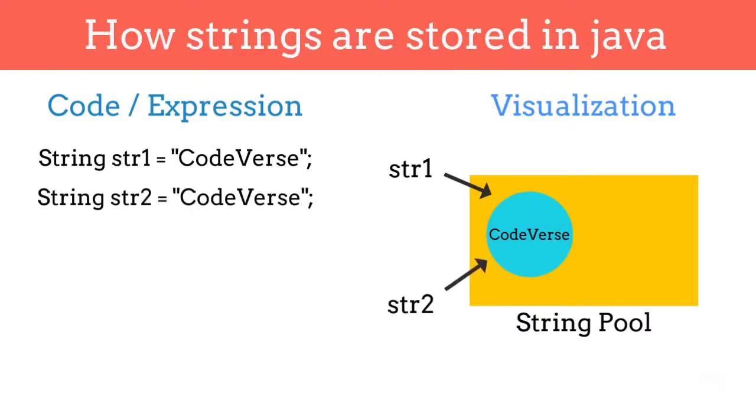You can check out my video on immutable strings in Java for more information. So now you can see that our two variables, str1 and str2, are storing the reference of the same object in a string pool.